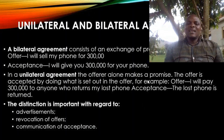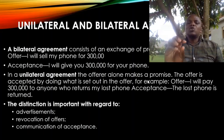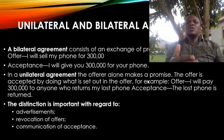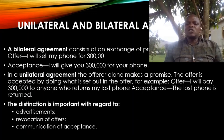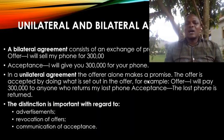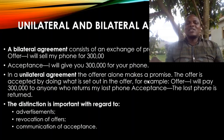There is a need to distinguish between a unilateral and a bilateral agreement. A bilateral agreement consists of an exchange of promises — for example, I will sell you my phone for 300,000 shillings, and the acceptance will be: I will give you 300,000 shillings for your phone. That is a bilateral kind of agreement.